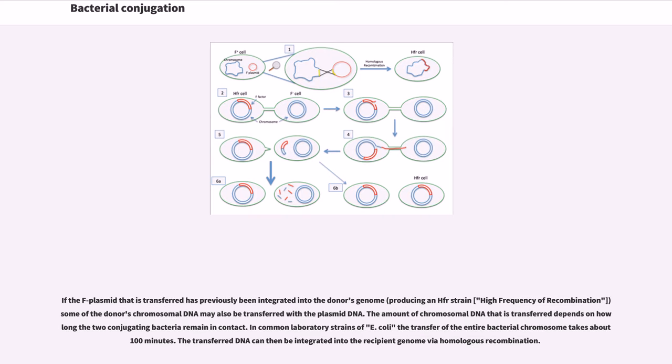If the F plasmid that is transferred has previously been integrated into the donor's genome, producing an Hfr strain (high frequency of recombination), some of the donor's chromosomal DNA may also be transferred with the plasmid DNA. The amount of chromosomal DNA that is transferred depends on how long the two conjugating bacteria remain in contact. In common laboratory strains of E. coli, the transfer of the entire bacterial chromosome takes about 100 minutes.